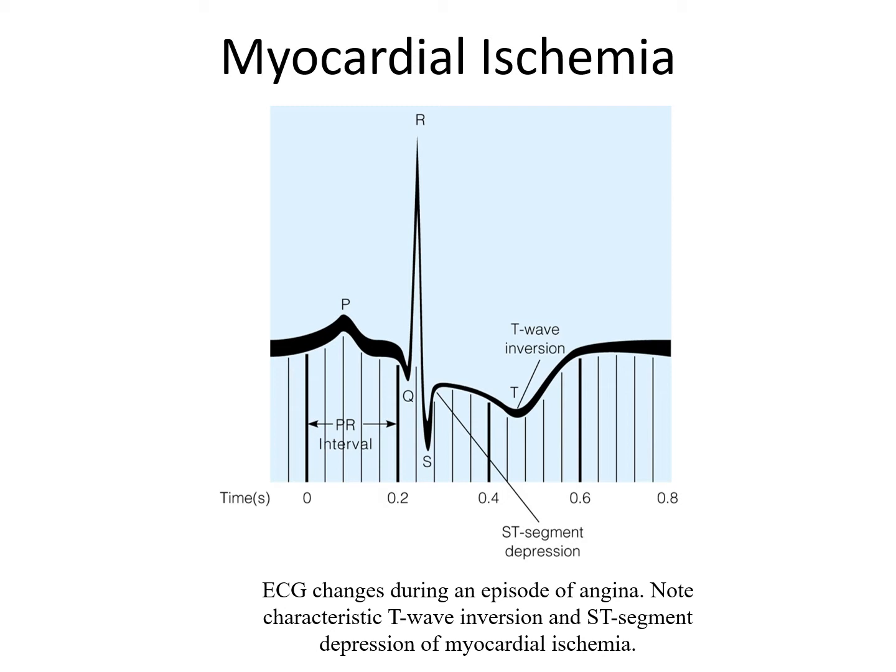In addition, whenever there is ischemia, we see an ST-segment depression. Looking at the ST-segment, you'll see that it falls below the isoelectric line, and because of that significant depression, in addition to the T-wave inversion, it indicates that there is ischemia occurring.